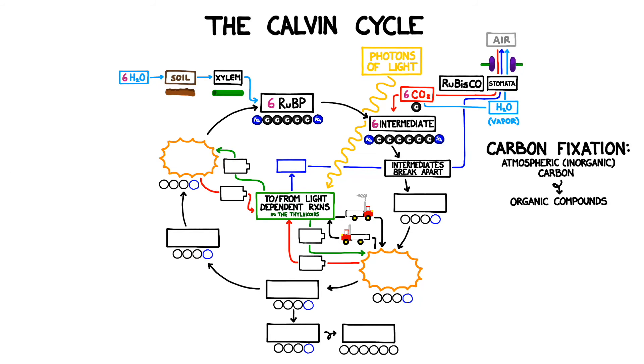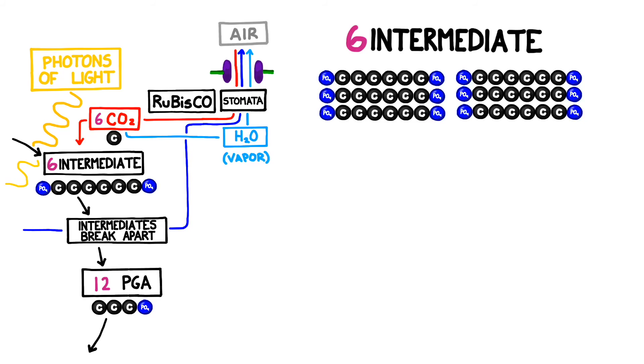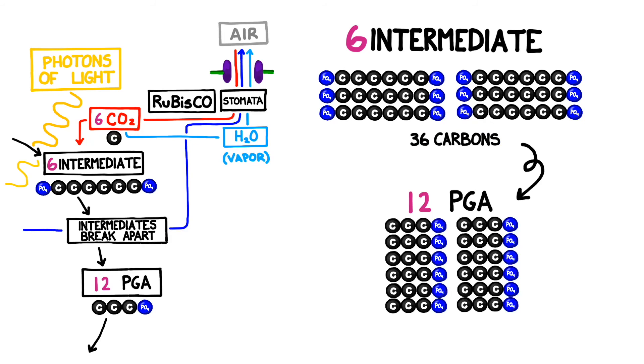The six-carbon intermediate is highly unstable, and it breaks apart almost immediately after forming. The resulting 12 molecules are called PGA, which is short for phosphoglyceric acid, and they each have three carbons. Again, note that we haven't mysteriously lost or gained any carbons. We had six times six carbons in the previous step, and now we have 12 times three carbons for a total of 36 each time.